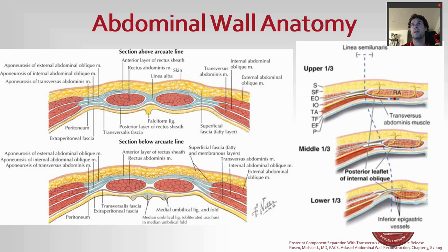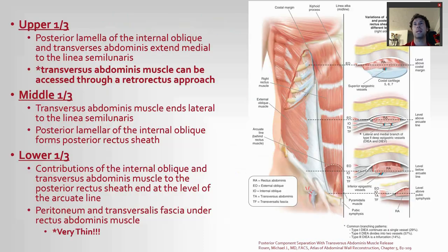If you look at the picture on the right, at the linea semilunaris, this represents the upper third of the abdomen. You can clearly see the transversalis muscle is actually medial to the rectus abdominis muscle and undermines it by about 50 percent. As you go towards the lower third of the abdomen, the transversalis muscle does reflect what Netter shows. This is a very important concept because we take advantage of it for a lot of these advanced abdominal wall reconstructions.